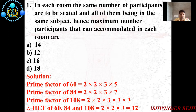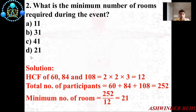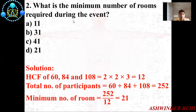So the correct option is 12. Now we discuss the second question: What is the minimum number of rooms required during the event? There are four options: 11, 31, 41, and 21.